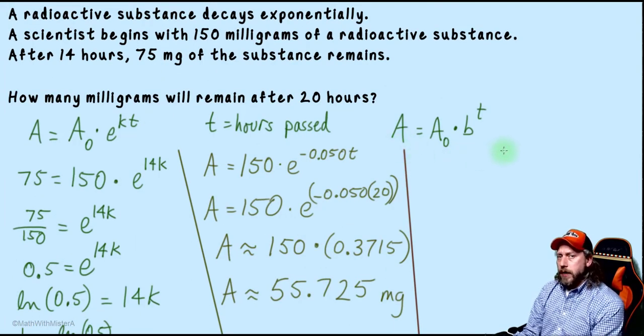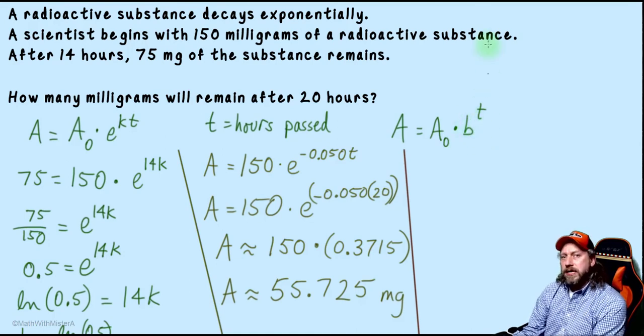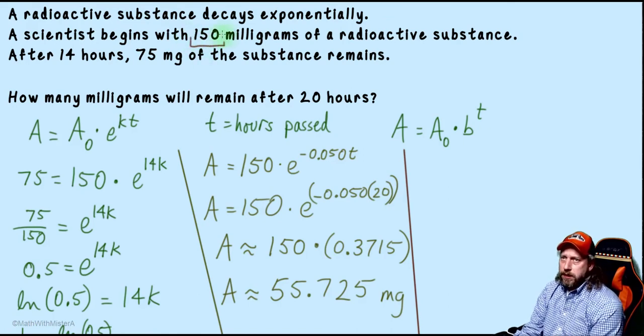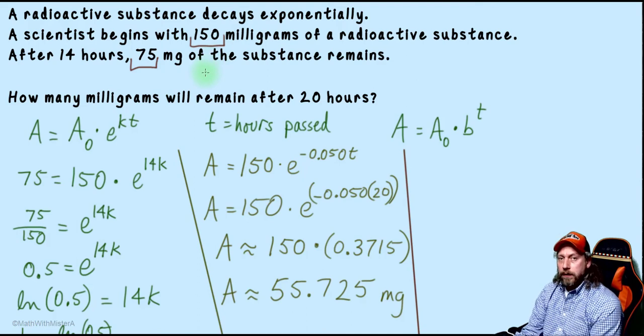Now let's take a look at using the other exponential model. In this case, we don't automatically use base e. Our base is this—currently it's a variable b, it's unknown. We would need to have some information from the problem to let us know what we could use as a base. And what I noticed about this problem was that from the information given, we started with 150, and after 14 hours we have 75, but that's cutting in half. And exponential models are all about modeling through multiplication.